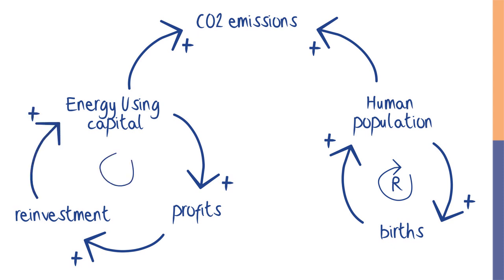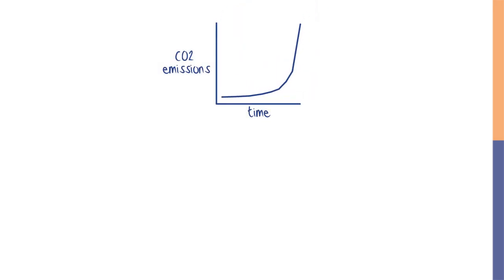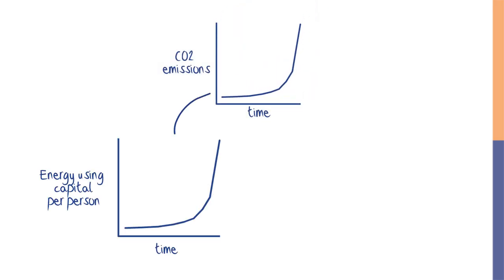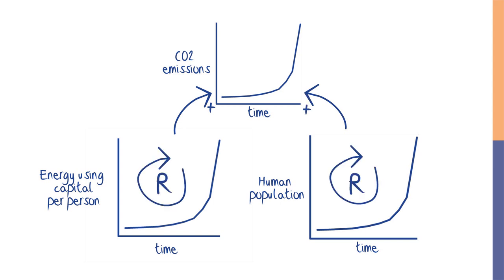For the last few centuries, both human population and the amount of energy use have been growing, driven by these reinforcing feedback loops. And so the shape of this CO2 emissions curve is determined by the shape of both of these, each powered by reinforcing feedback.